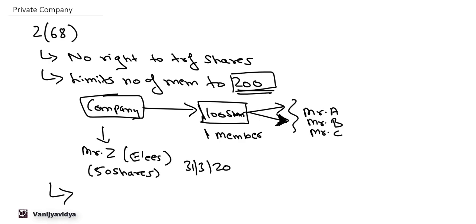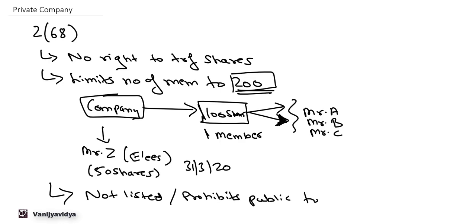The third clause is that a private company prohibits any invitation to the public to subscribe for shares and is not listed on any stock exchange. So the general public is prohibited from subscribing for shares. If some members jointly hold shares, they count as one member; former employees holding shares are excluded from the count; and the company is not listed on any stock exchange.